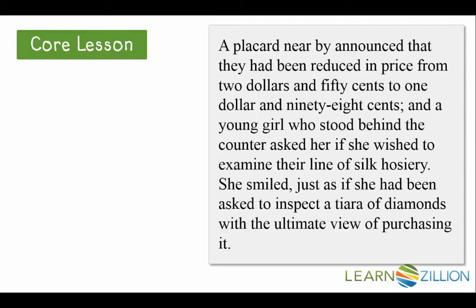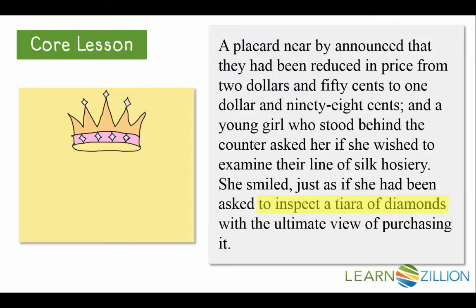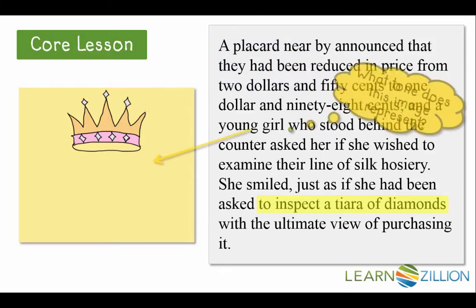Here is another example of figurative language from the story. This part of the text is from the moment right before Mrs. Sommers touches the silk stockings. Here, Kate Chopin is comparing the silk stockings to a tiara of diamonds. I know what a tiara is — something that a princess would wear. How glamorous! I can very easily picture a tiara in my mind's eye, so I'll draw this image on my sticky note.